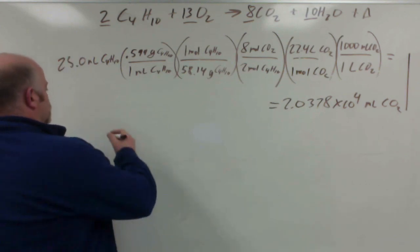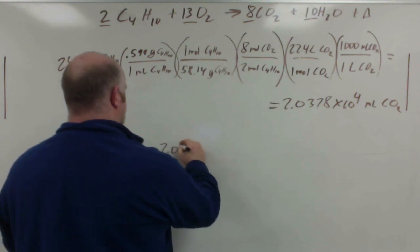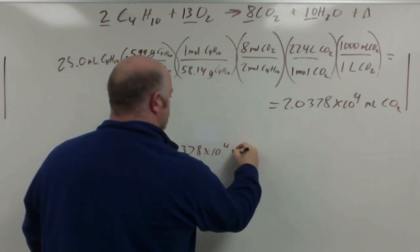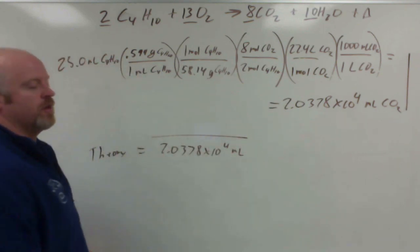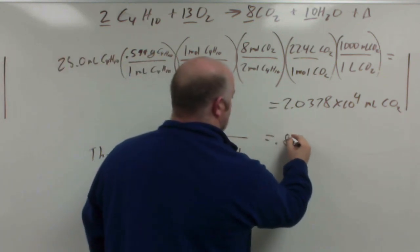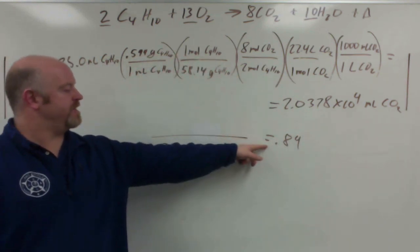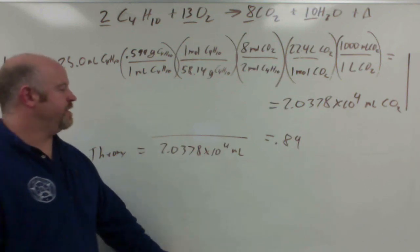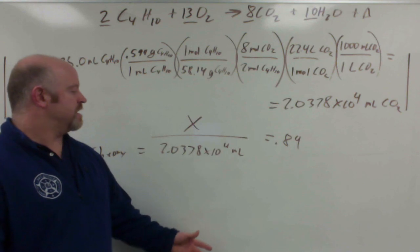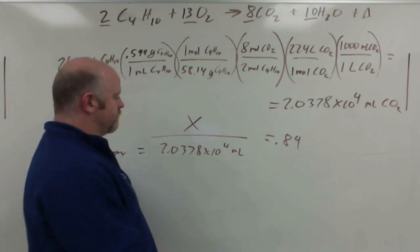So in theory we should make 2.0378 times 10 to the 4th milliliters. The reality is we're only going to get 89% of that. So we're going to get 89% of this value, which means we need to figure out how much will we actually make. So our last step here is to take this number times the 0.89 to solve for x.